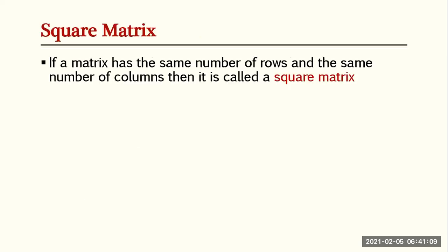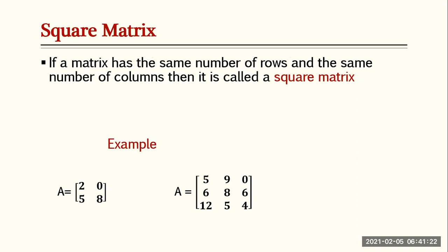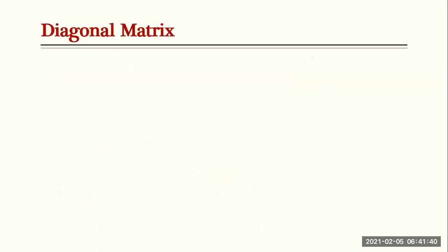A square matrix: if a matrix has the same number of rows and the same number of columns, then it is called a square matrix. For example, matrix A is a two by two square matrix because it has two rows and two columns. The number of rows must be the same as the number of columns.